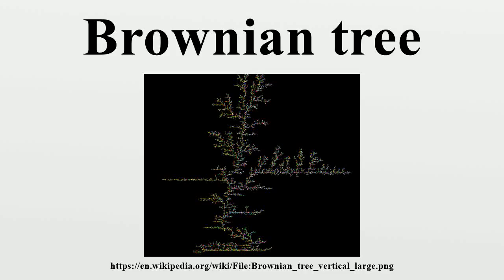A Brownian tree, whose name is derived from Robert Brown via Brownian motion, is a form of computer art that was briefly popular in the 1990s, when home computers started to have sufficient power to simulate Brownian motion. Brownian trees are mathematical models of dendritic structures associated with the physical process known as diffusion-limited aggregation.